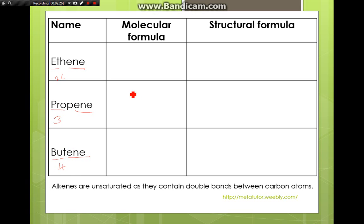We do not start with one carbon because we need to have at least a double bond between two carbons. So the first member of alkenes has two carbons.